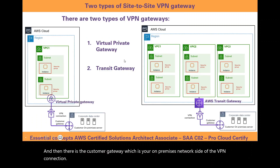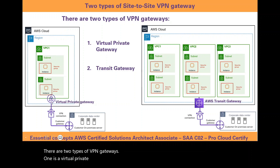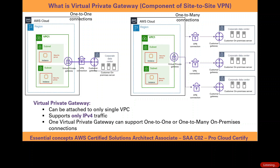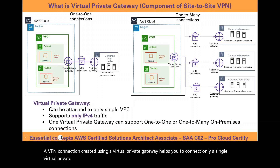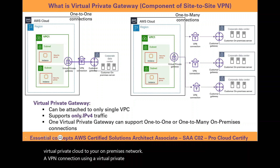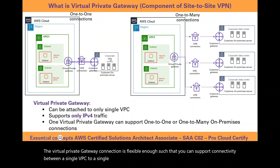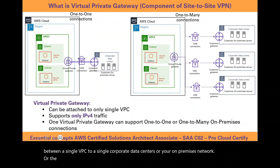There are two types of VPN gateways: one is a virtual private gateway and the other is a transit gateway. A VPN connection created using a virtual private gateway helps you to connect only a single virtual private cloud to your on-premises network, and only supports IPv4 traffic. The virtual private gateway is flexible enough to support connectivity between a single VPC to a single corporate data center or to multiple on-premises networks.